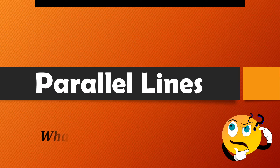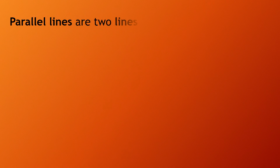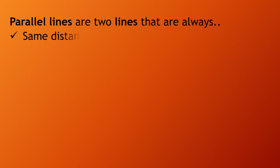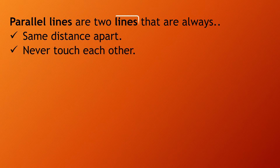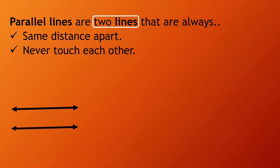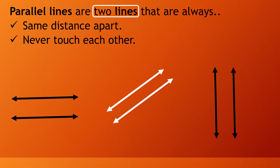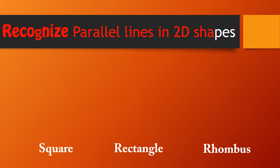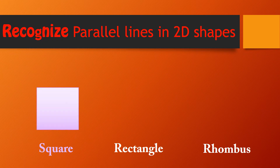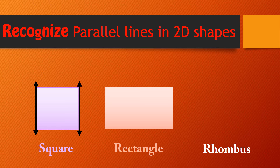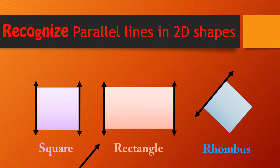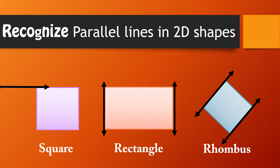Parallel lines are two lines that are always the same distance apart and never touch each other. They can be in any direction — horizontal, diagonal, or vertical. We can recognize parallel lines in 2D shapes as well: in a square, in a rectangle, and in a rhombus.